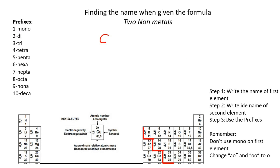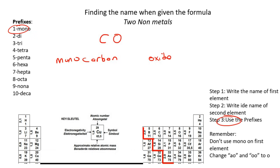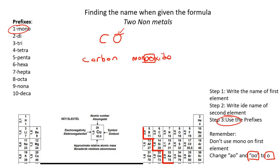Our last example is CO. Carbon is a non-metal and oxygen is a non-metal. Step one: write down the name of the first element — carbon. Step two: write the IDE name — oxide. Step three: use prefixes. There is only one carbon, but we don't say mono on the first element. For the second one, there is only one oxygen, so we will put mono. But now you've got two O's next to each other, so we change that to just one O. So we end up with carbon monoxide.